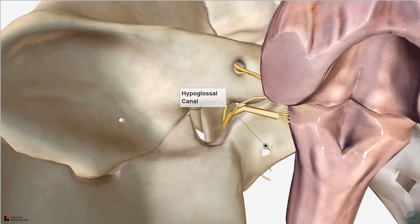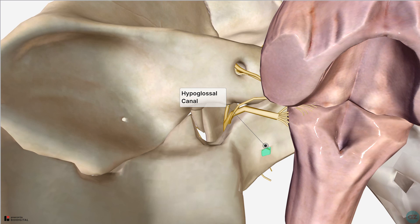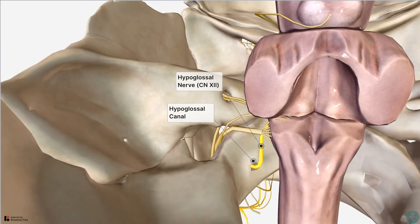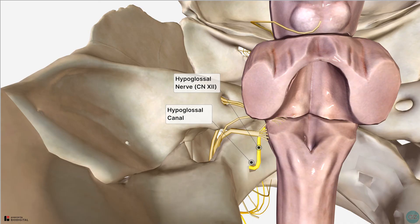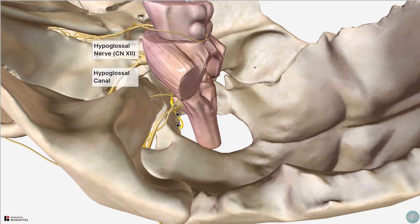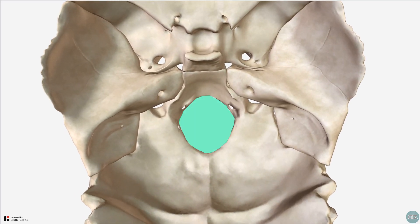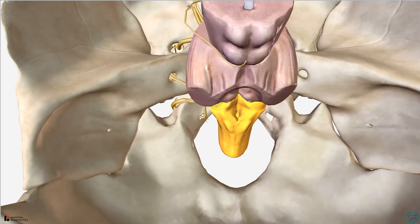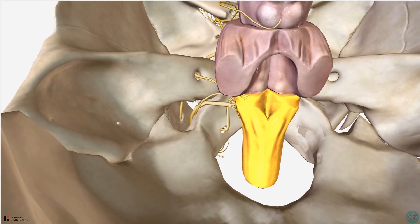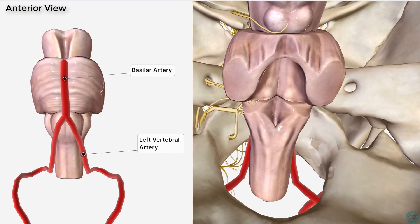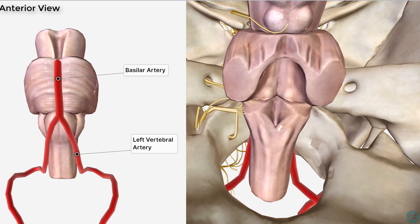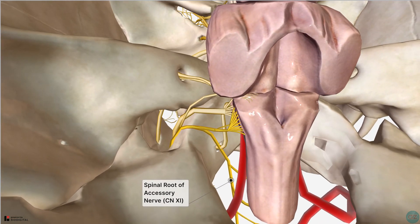Next we have the hypoglossal canal, through which the 12th cranial nerve, the hypoglossal nerve, passes. Finally, we come to the largest foramen of the skull, formed by the occipital bone: the foramen magnum. The main structures that pass through include the medulla oblongata, the vertebral arteries, the spinal root of the accessory nerve, and the anterior and posterior spinal arteries.